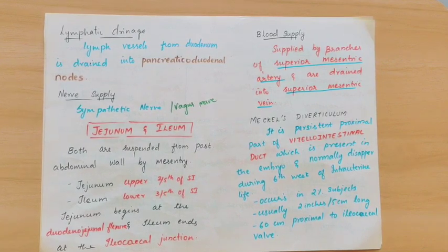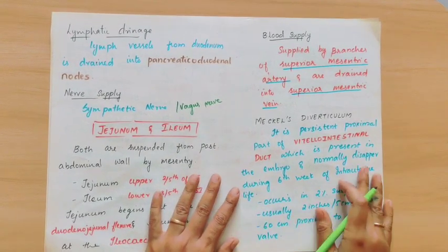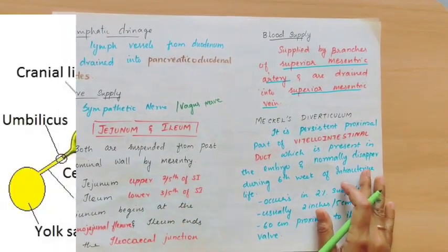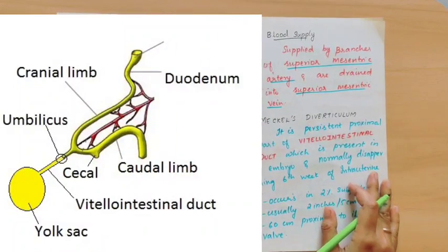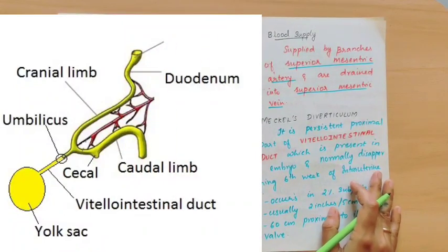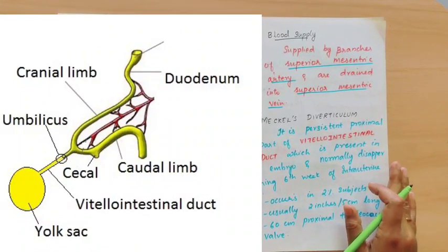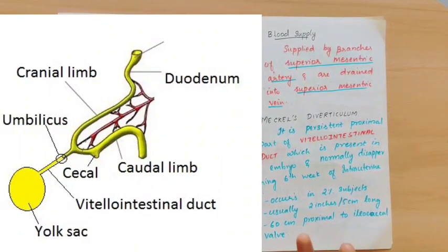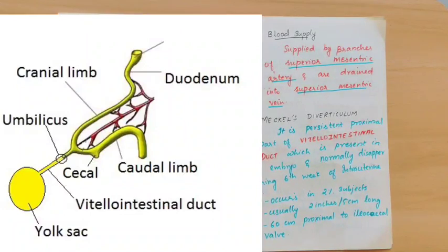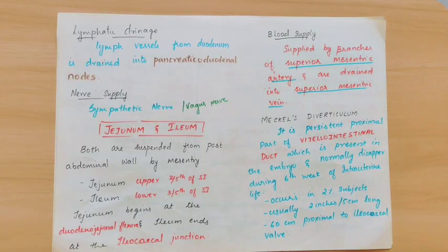Now coming to Meckel's Diverticulum. In embryo development, it is a remnant of the midgut. It is a vitello-intestinal duct remnant. In the 6th week of embryo development, this duct usually disappears, but in 2% of subjects it can persist as a diverticulum.